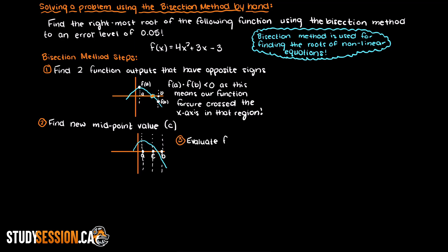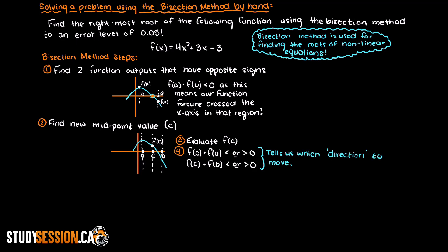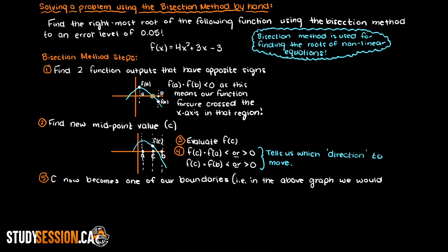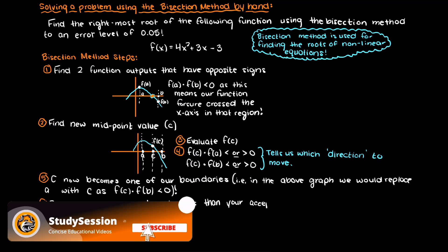Thirdly, we evaluate the function at c. Fourth, we multiply f(c) by both f(a) and f(b), and whichever of these two values gives us a negative value back is the direction that we move in. Step 5: c from step 4 now becomes our other boundary, so it replaces a or b depending on which direction you moved. Lastly, we just repeat this process until the difference between a and b becomes less than your acceptable level of error.